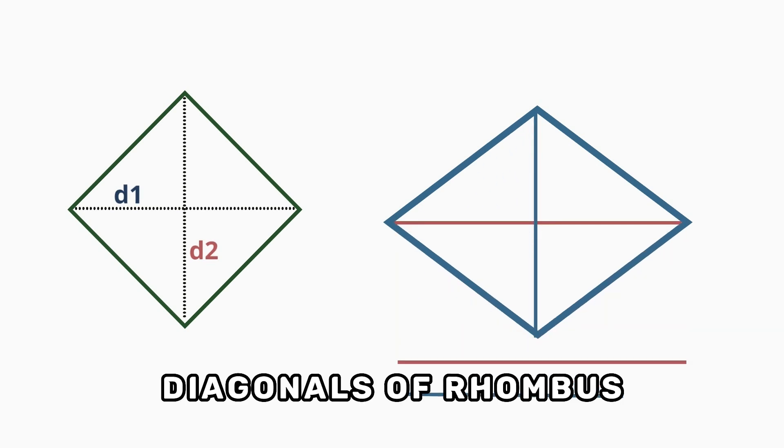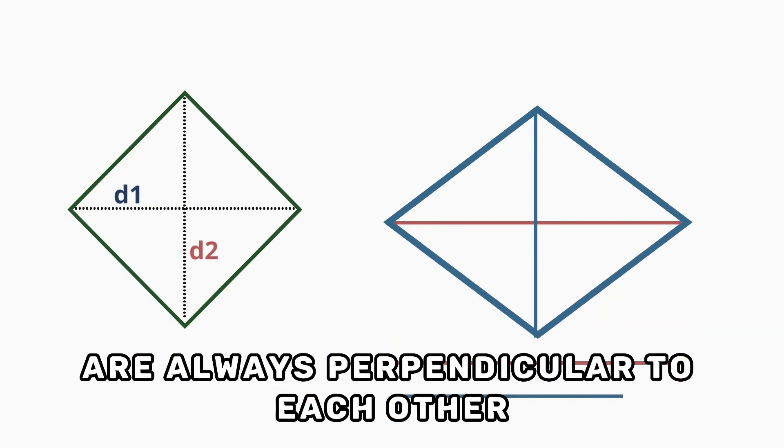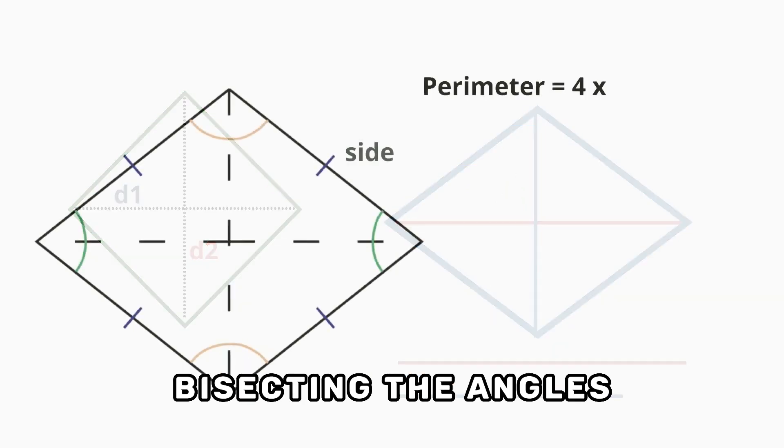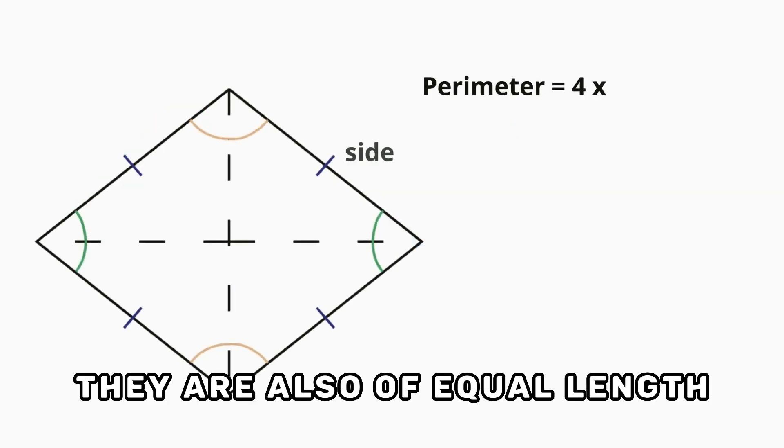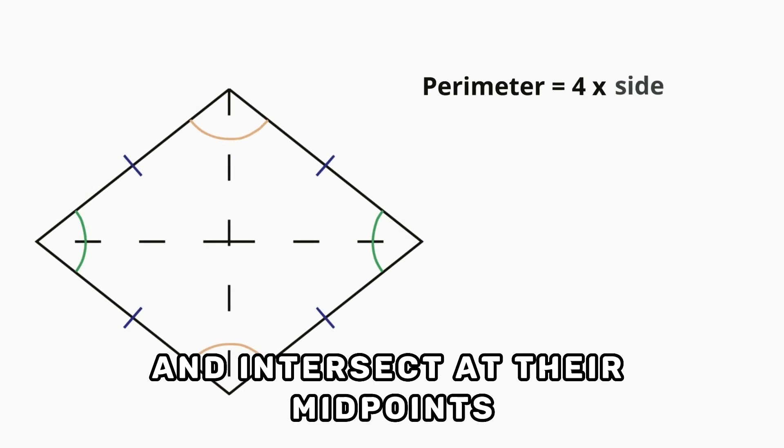Diagonals of rhombus: The diagonals of a rhombus are always perpendicular to each other, bisecting the angles. They are also of equal length and intersect at their midpoints.